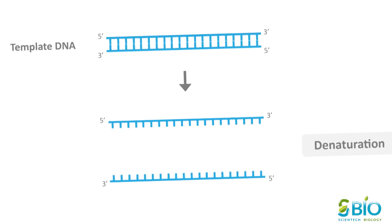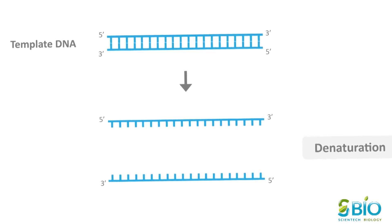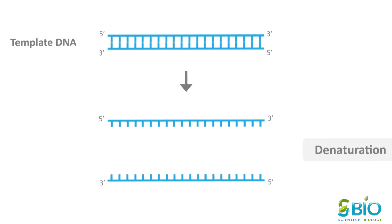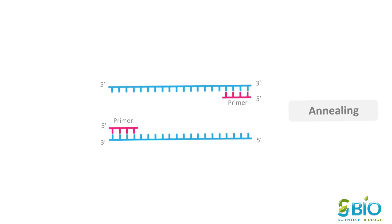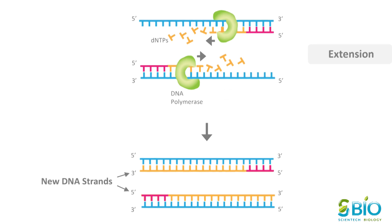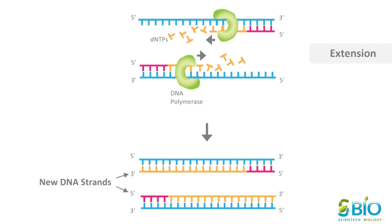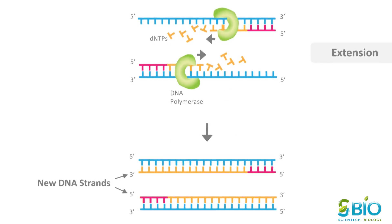Denaturing, when the double-stranded template DNA is heated to separate it into two single strands. Annealing, when the temperature is lowered to enable the DNA primer to attach to the template DNA. Extending, when the temperature is raised and the new strand of DNA is made by the Taq polymerase enzyme.